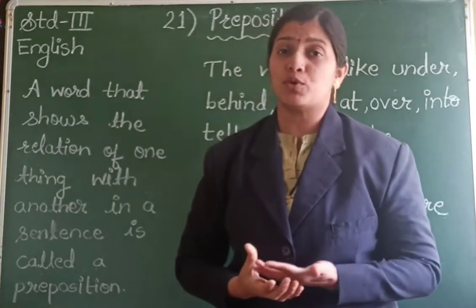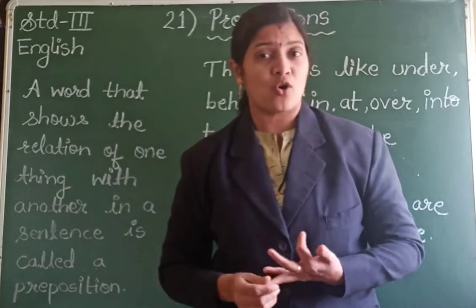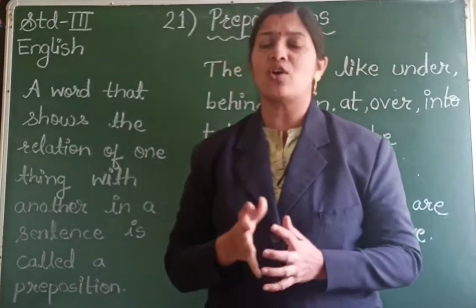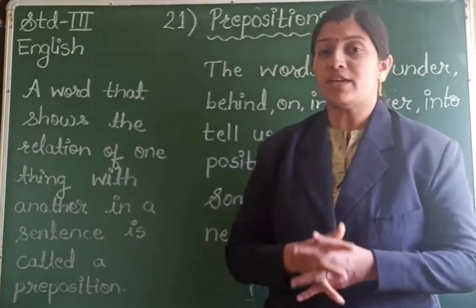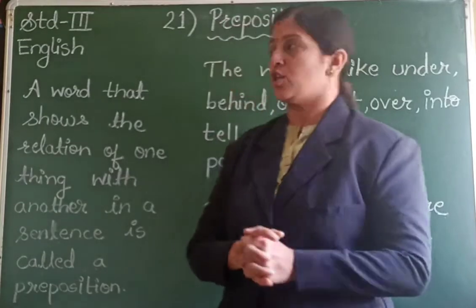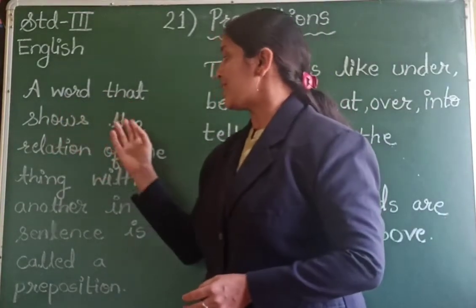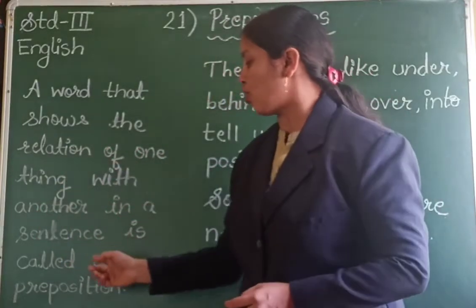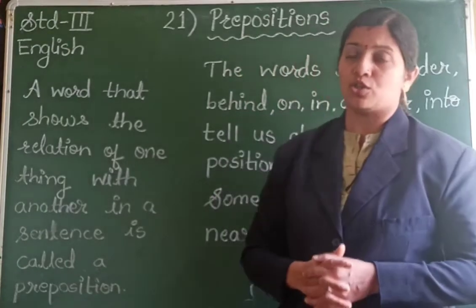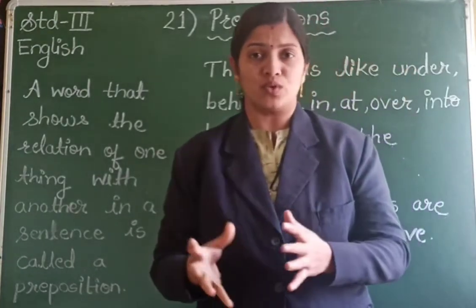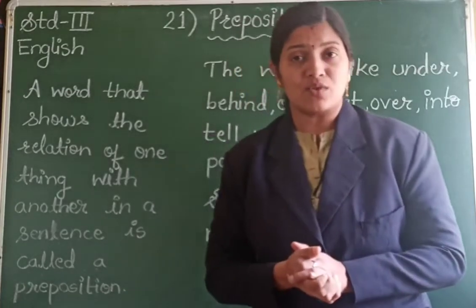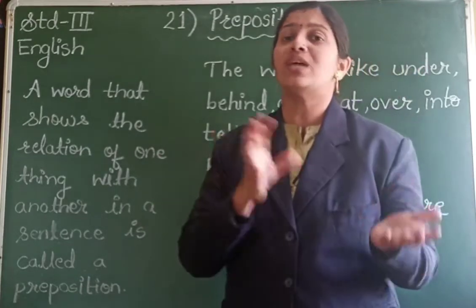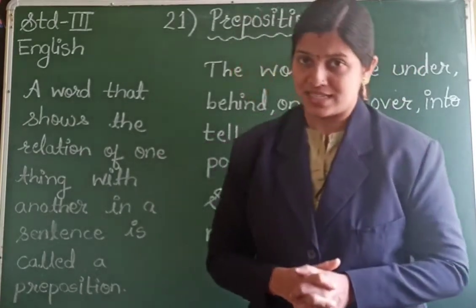What are prepositions? Prepositions are words like in, on, under, above, over, below — all these words are called prepositions. The definition is: a word that shows the relation of one thing with another in a sentence is called a preposition. Prepositions are the words which tell us about the relation of one thing to another thing in a particular sentence.